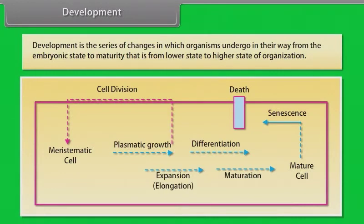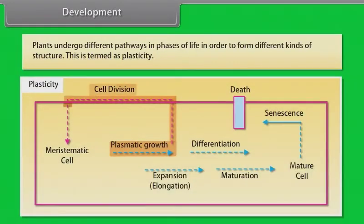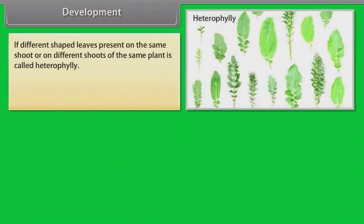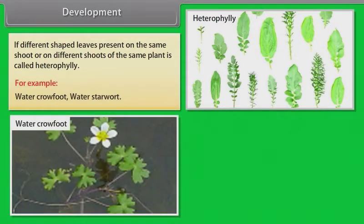Development. Development is the series of changes in which organisms undergo in their way from the embryonic state to maturity, that is, from lower state to higher state of organization. Plants undergo different pathways in phases of life in order to form different kinds of structure. This is termed as plasticity. If different shape leaves present on the same shoot or on different shoots of the same plant, it is called heterophylly. For example, water crowfoot, water starwort.